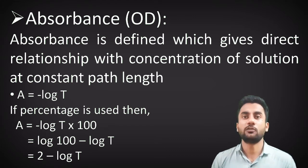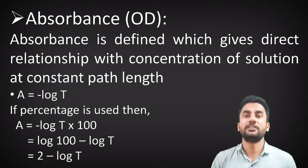The absorbance or optical density gives the direct relationship with the concentration of the solution at constant path length. That is, A is equal to minus log T. If percentage is used, then A is equal to minus log T into 100. So A is equal to log 100 minus log T. We can say that absorbance is 2 minus log T.